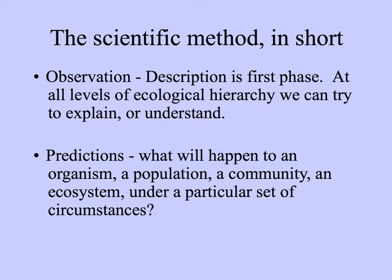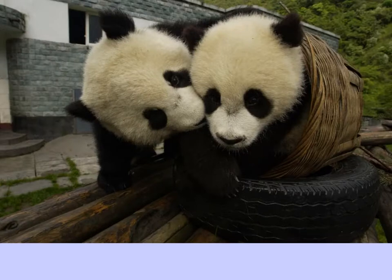The first step of the scientific method is observing some phenomenon and then asking a question about it. You may also make a prediction about what will happen to a population or an ecosystem under a particular set of circumstances. As an example, I want to use one of my favorite organisms, native to China: the giant panda. These two are shown playing in a play yard of a panda reserve.